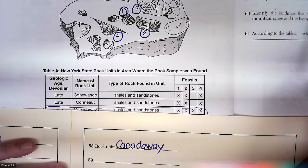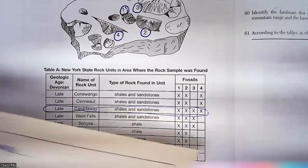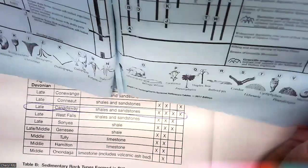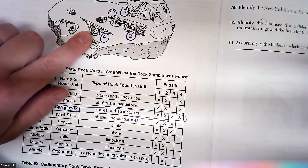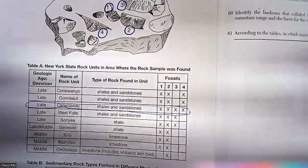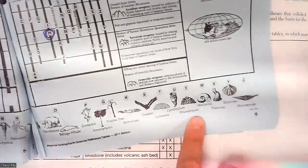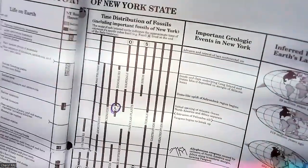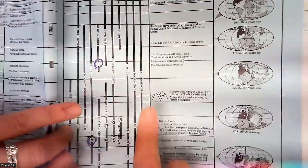Question 59: identify the New York State index fossil group that includes fossil four shown on the rock table. That is this reference table. Fossil four looks like that — you have to find it along the bottom. It looks like letter Z. It wants a fossil group — these are the fossil groups in this column. Z is a brachiopod. This is a lot of work for these answers, which is why you get so much time to take this test.